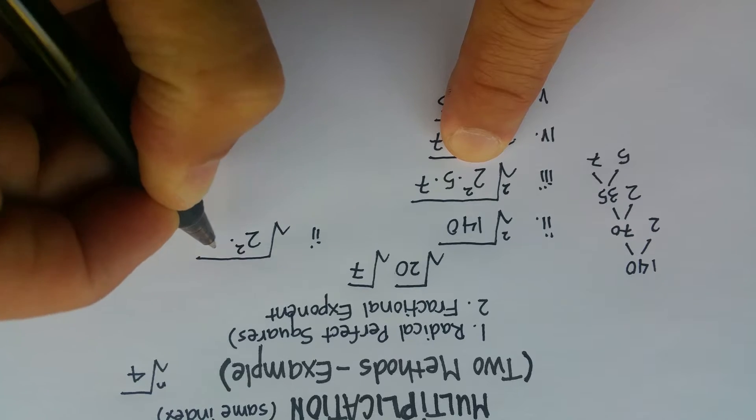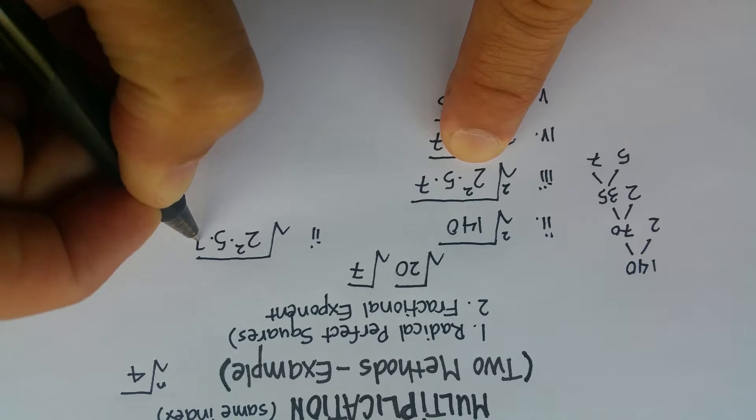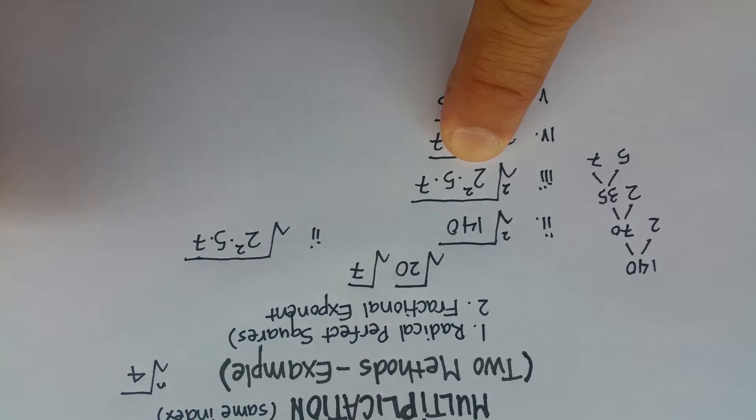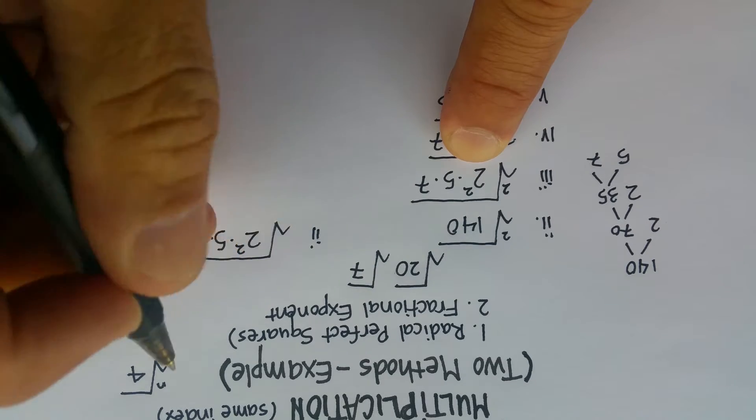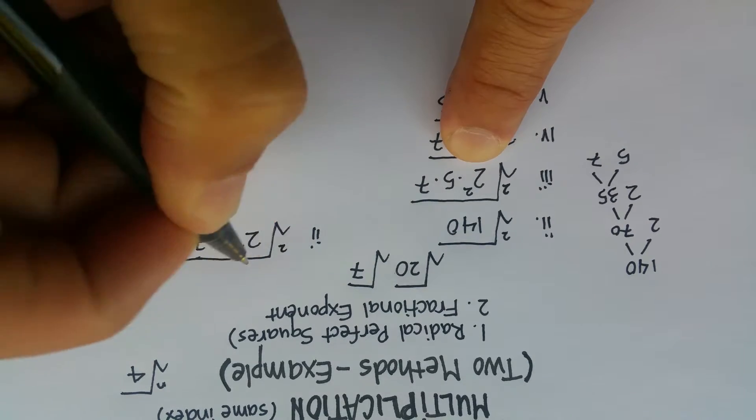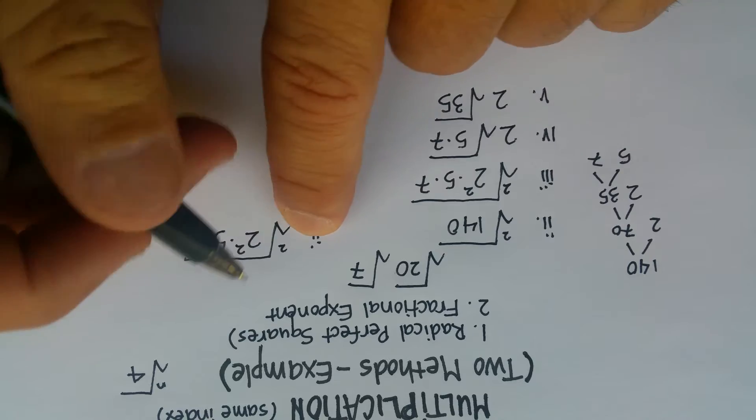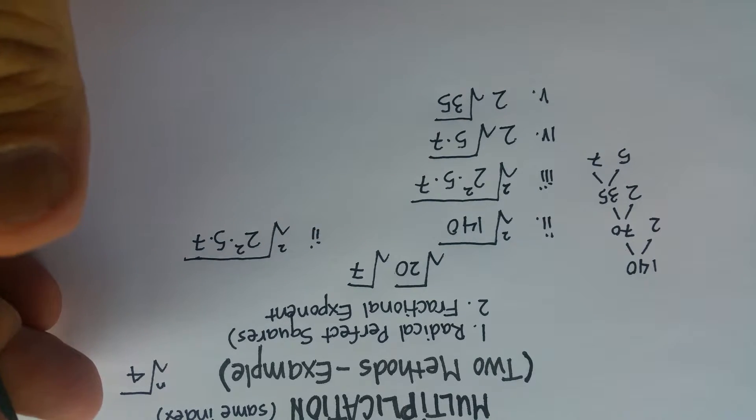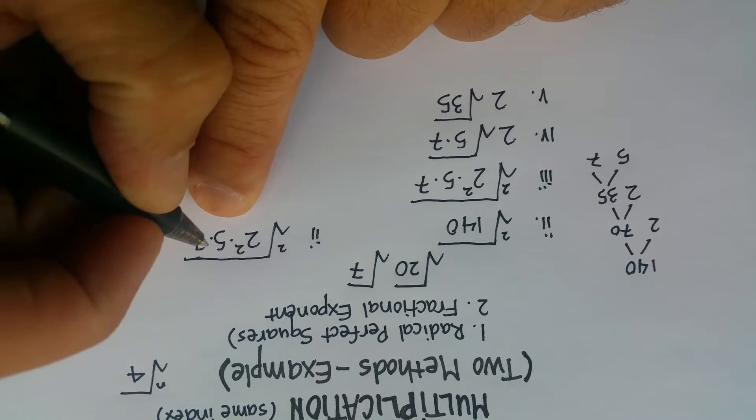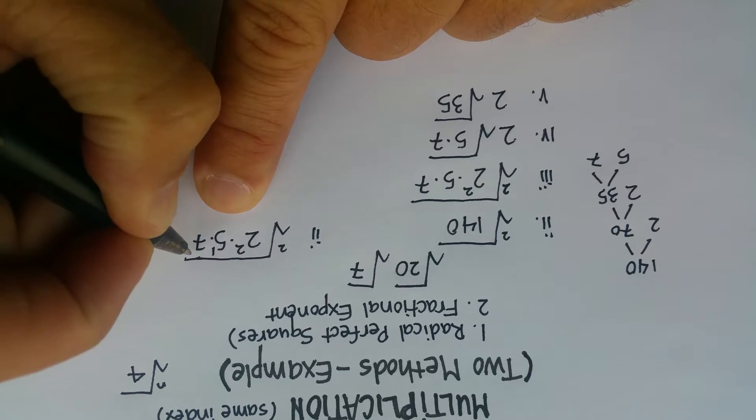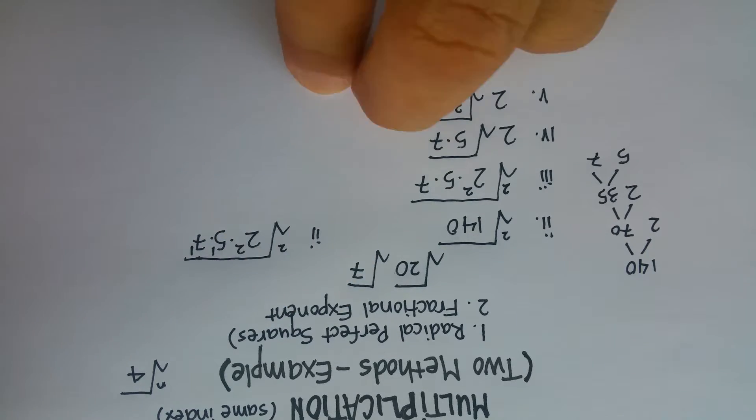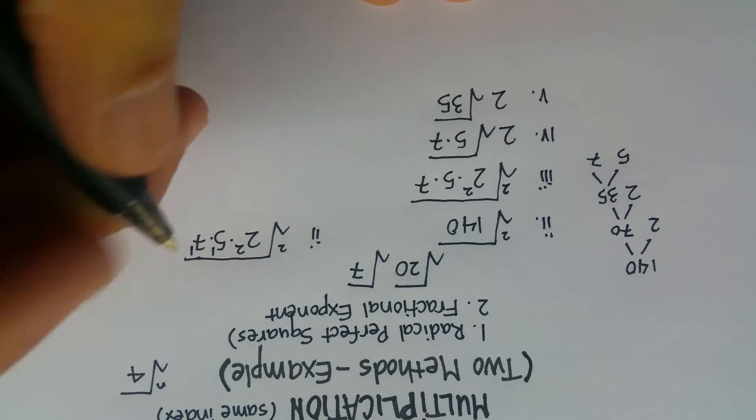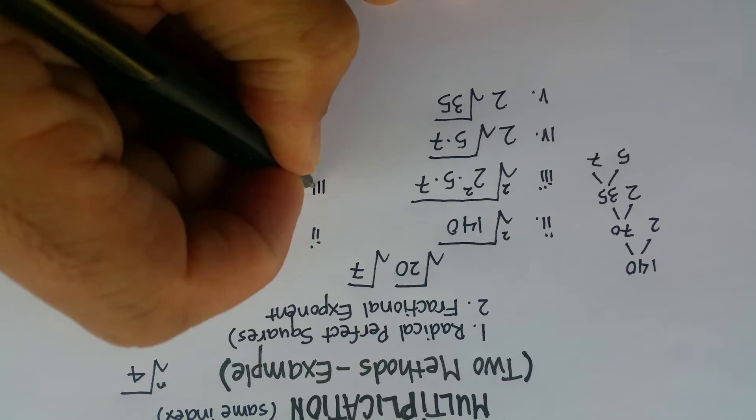So it's 2 squared times 5 times 7. Now, again, just to illustrate, I'm going to put indices there. Normally, you don't put the 2 there. When it's a square root, we just kind of understand that it's there. And normally, we don't even put a 1 for the exponent because we just understand that it's there. But I'm going to put it here so I can illustrate this method a little bit better.